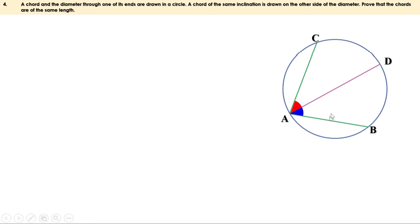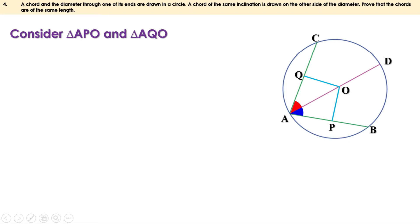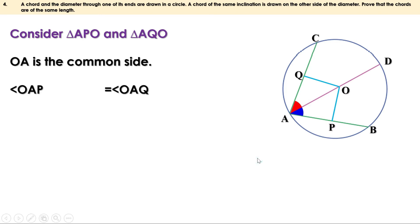Let us mark the center as O and draw perpendiculars from the center to the chords, meeting them at P and Q. Consider triangles APO and AQO. OA is the common side. Given that angle OAP equals angle OAQ, and since OP and OQ are perpendicular to the chords, these two angles are 90 degrees and hence equal. Therefore the third angles of the triangles are also equal. One side and two angles at the ends of triangle APO equal one side and two angles at the ends of triangle AQO. Therefore the triangles are equal.